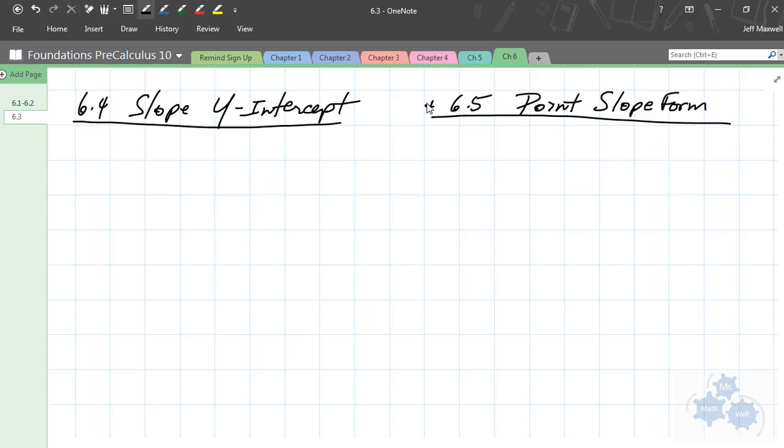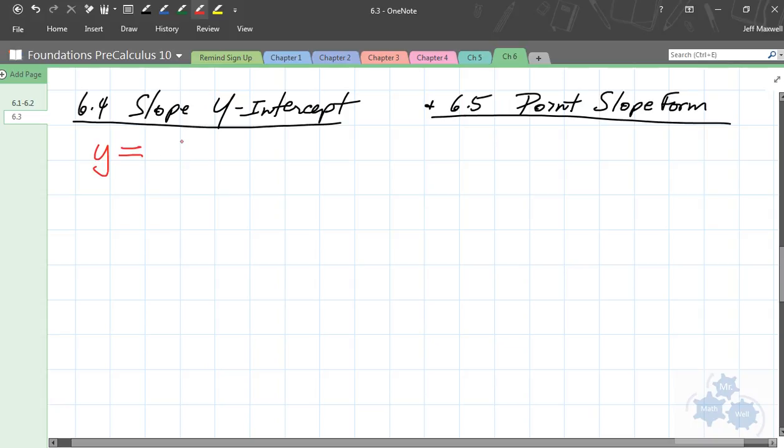So, we've already talked about slope y-intercept form. It's y equals what? Help me out here. y equals mx plus b. Right. So, m is the what? m is the slope. Okay, so if it's in this form, like this, m, that's the number that is multiplied by the x variable, the one that's attached to the x. That's the slope. And this right here, b, is the y-intercept.